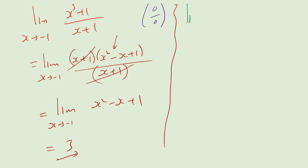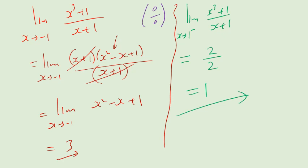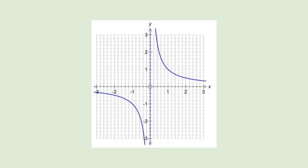Now what about the limit of x cubed plus 1, all over x plus 1, but now as x approaches 1 — from the left of 1? Direct substitution: 1 plus 1 is 2, all over 2, equals 1. Note the big difference: approaching minus 1 versus approaching 1 matters a great deal.